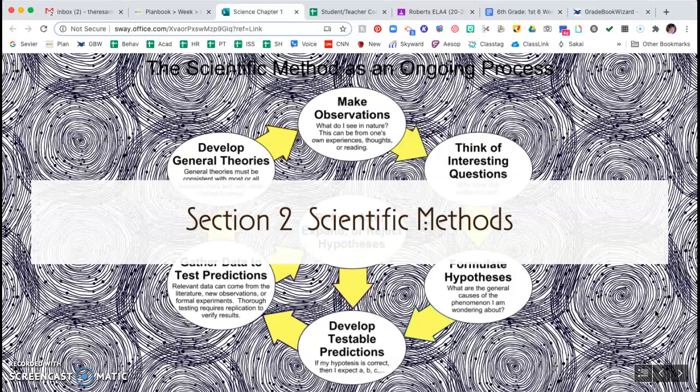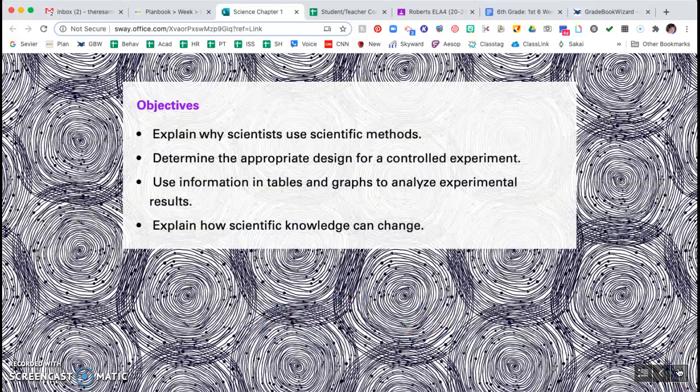So today's lesson, directed reading 1.2, is scientific methods. We have four objectives today. You should be able to explain why scientists use scientific methods, determine the appropriate design for a controlled experiment, use information in tables and graphs to analyze experimental results, and explain how scientific knowledge can change.